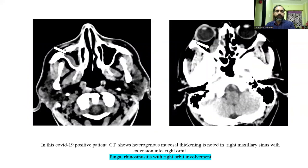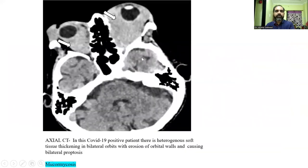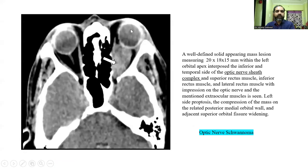In this COVID-19 positive patient, the CT image shows heterogeneous mucosal thickening in the right maxillary sinus. This is also a COVID-19 positive patient. In this image, heterogeneous soft tissue thickening in bilateral orbits with erosion of orbital walls causing bilateral proptosis was seen. This was also a case of mucormycosis.